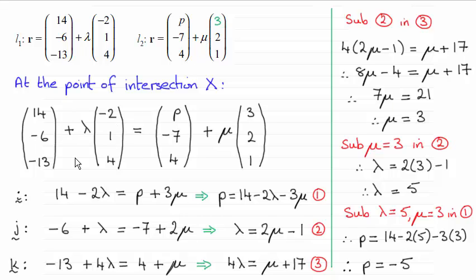So you'll notice I've just equated them and then what we do is compare the i, j, and k components. So with the i components you can see I've done 14 minus 2 lambda equals P plus 3 mu as you can see here, and I've done the same for the j and k components.